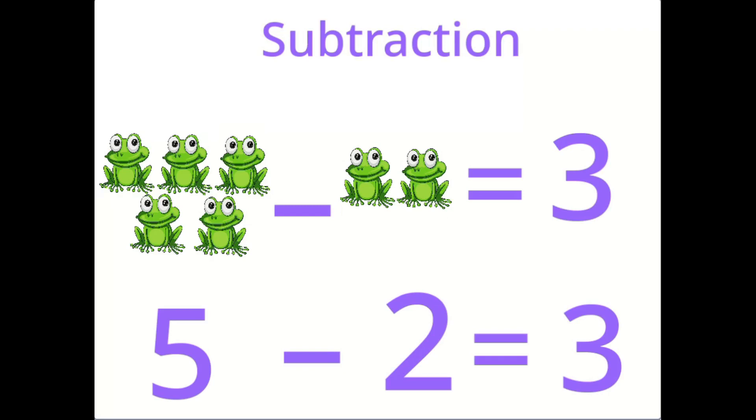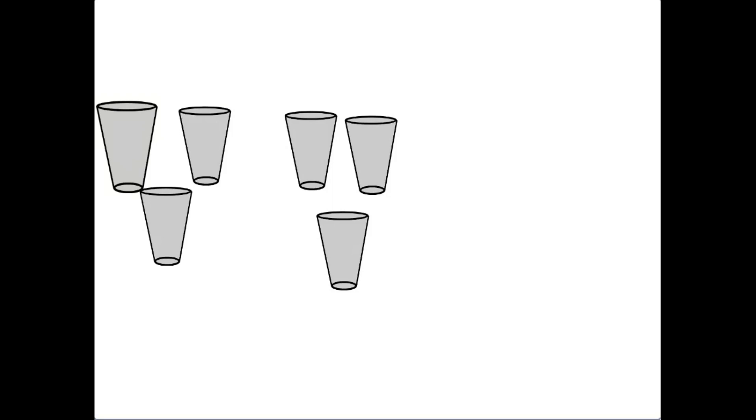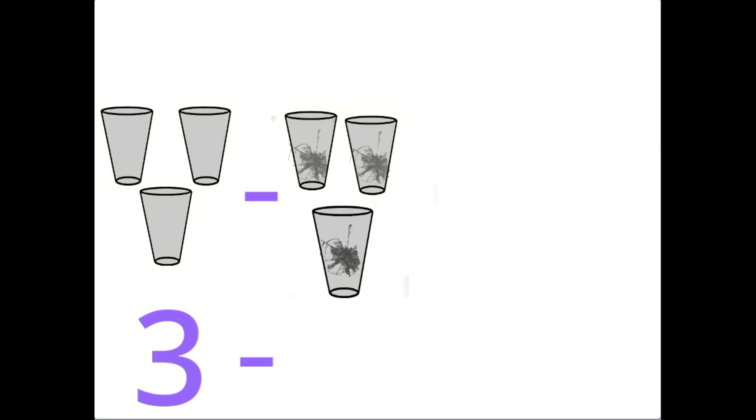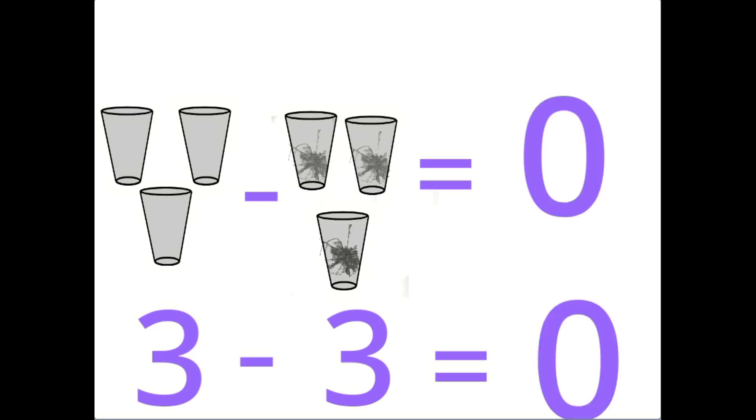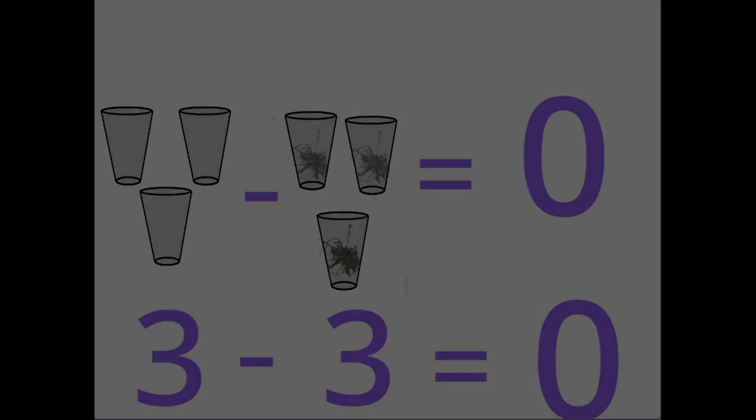Kids, let us do the next exercise. Let's count the number of glasses for the first one: one, two, three. Now let's count the number of glasses which are broken for the second one: one, two, three. Okay kids, now let us subtract three minus three. Three minus three is equal to zero.